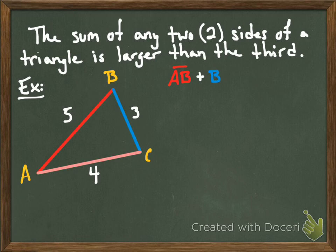Alright, so let's do the first possibility. Remember that the theorem says that the sum of any two sides of the triangle is larger than the third. So I started with line segment AB plus line segment BC has to be greater than the third line segment which is AC. So I'm gonna simply plug in my numbers and five plus three is eight and clearly eight is greater than four. So that checks out.